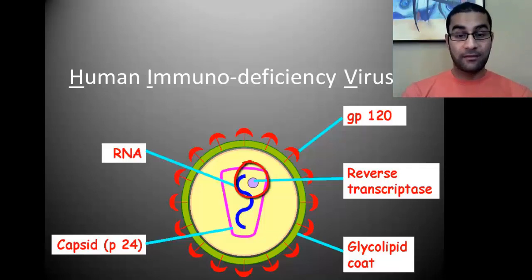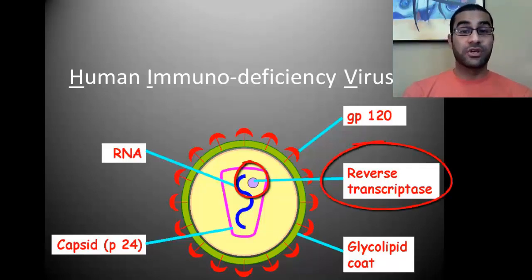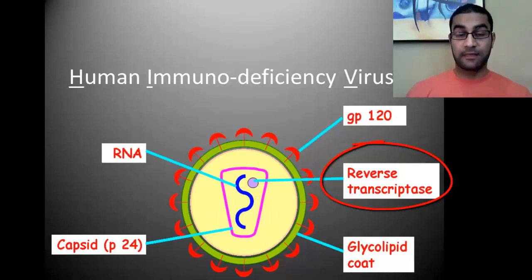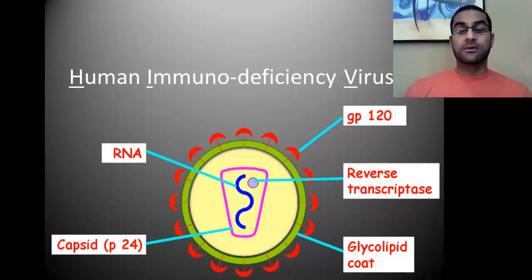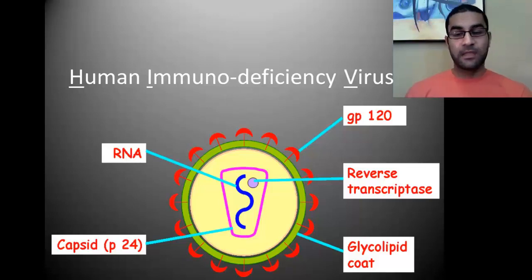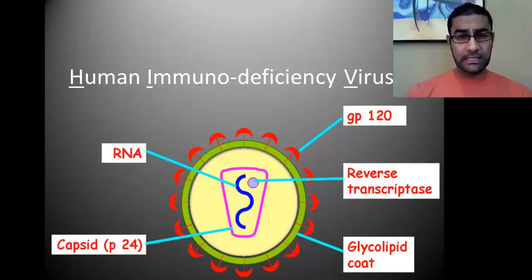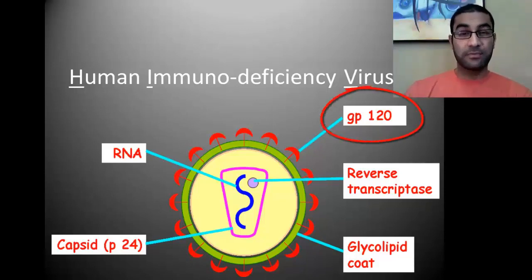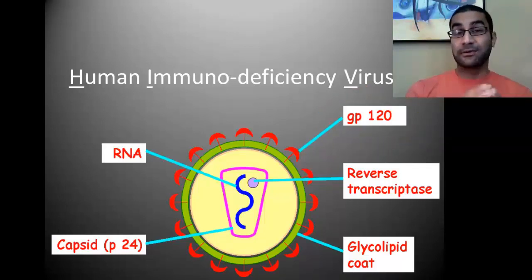HIV has an enzyme inside the capsid called reverse transcriptase. The process of going from DNA to RNA is called transcription, so the opposite is called reverse transcription, and the enzyme responsible is called reverse transcriptase. That enzyme is very important because it's the one that'll help the RNA of HIV turn into DNA. The same is true for the flu — the flu is also a retrovirus and needs that reverse transcriptase. Another key thing: the specific receptor proteins or keys that HIV has on the outside are called glycoprotein 120, or GP120. That's the specific protein shape that allows HIV to match up to helper T cells.